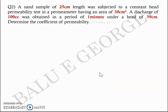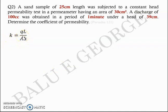Next question. A sand sample of 25 cm length was subjected to a constant head permeability test in a permeameter having an area of 30 cm². A discharge of 100 cc was obtained in a period of 1 minute under a head of 39 cm. Determine the coefficient of permeability. For a constant head test, K = Q·L / (A·H), where Q is discharge, L is length of flow, A is cross-sectional area, and H is the head causing flow.